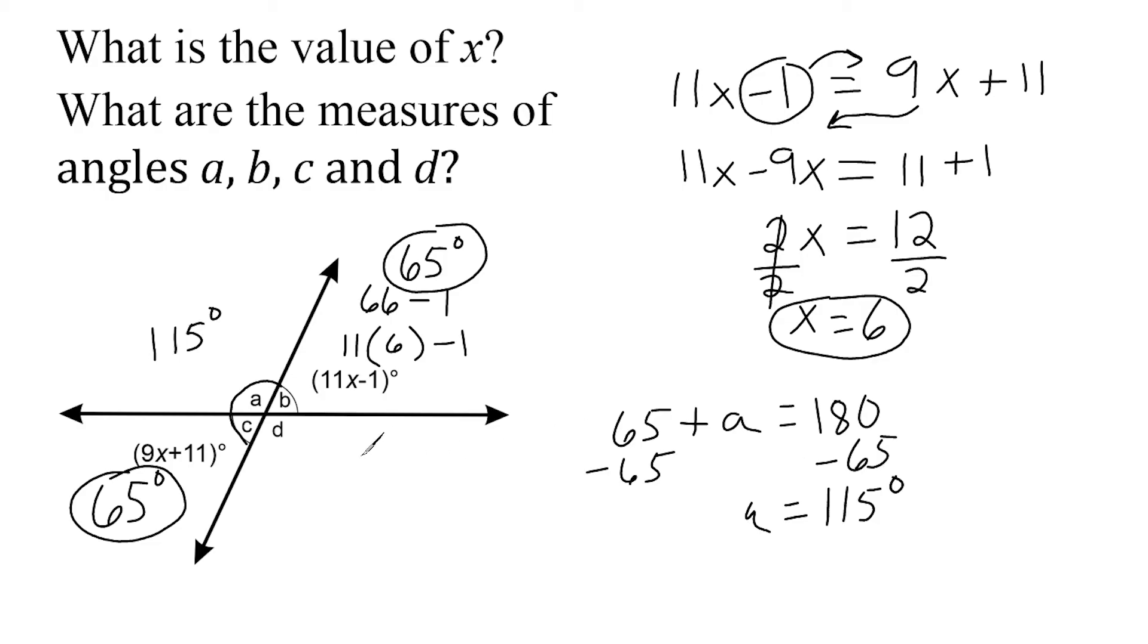Or you could just straight off the bat, just take 180 degrees and subtract 65. Because you should recognize that these two angles are supplementary to each other, you know that their total is going to be 180. And then you just subtract this acute angle here from the 180. And that would leave you with 115.